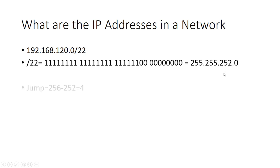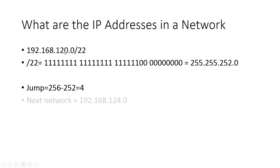Now let's calculate the jump, which is 256 minus 252. This 252 is the last nonzero value in the subnet mask, so the jump is 4. Our given network is 192.168.120.0 and the jump applies to the third octet, so the next network is four more than the value on the third octet — that means the next network is 192.168.124.0.